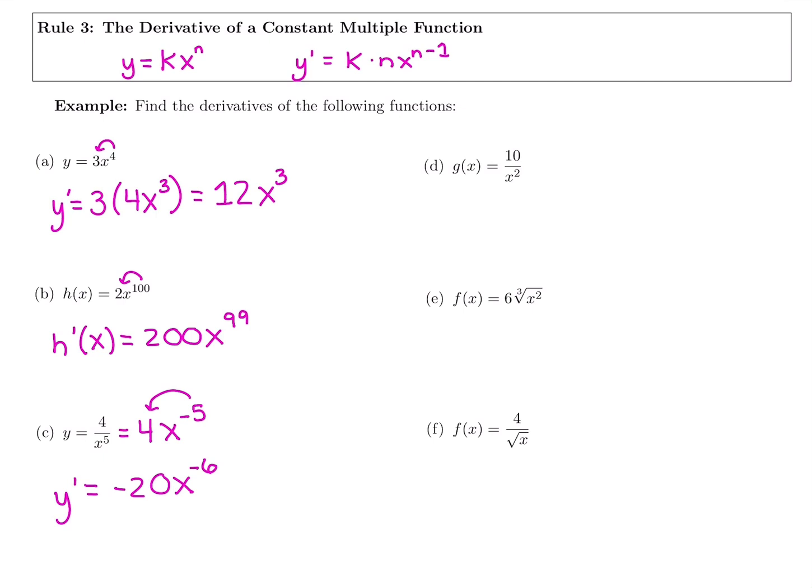Similarly with this g of x up here, I need to take a second and just rewrite the function. I have x in the denominator, so it must be raised to a negative power. I have 10 and then it's x to the negative 2. It feels like I did work, but again, you did not take a derivative unless you brought down that power.